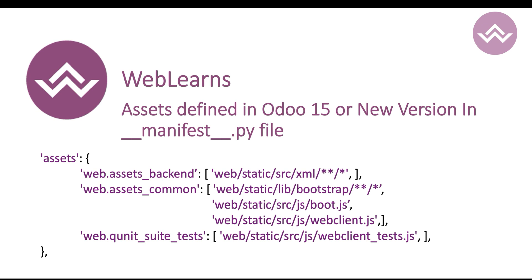In version 15 and newer versions — and now in October a new version 17 has been released — defining assets files has moved to the manifest file. So instead of defining everything on the XML side, in these newer versions we define assets in the manifest file. In the manifest file you can see the assets key is available, along with different sub-keys. We will cover the purpose in a later session.